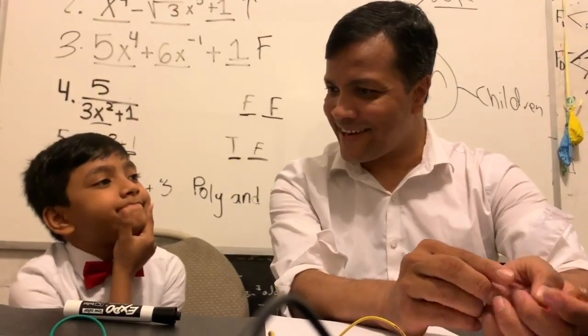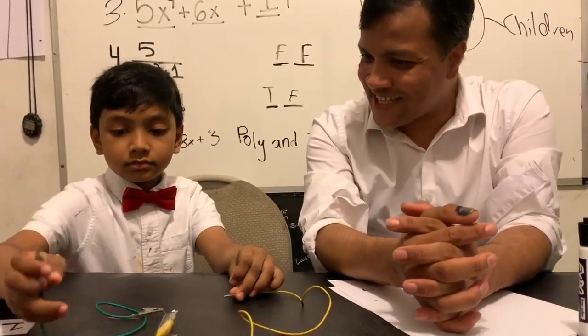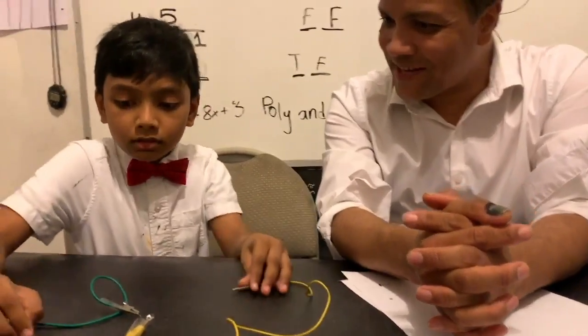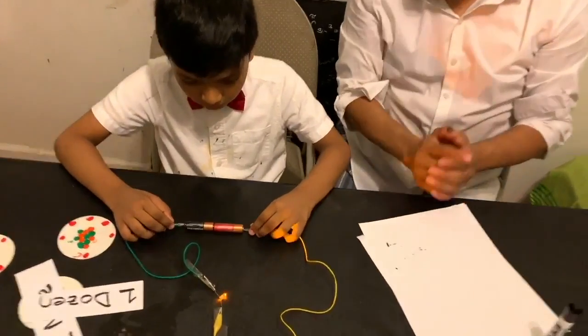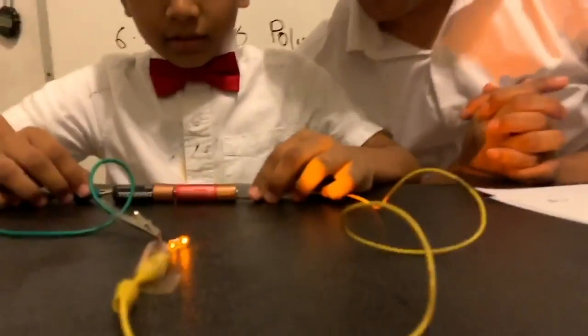The unit of luminous intensity is candela. The unit for current is ampere — now put that understanding into action. Can you create current? Let's try the demo — it's kind of dark in here.